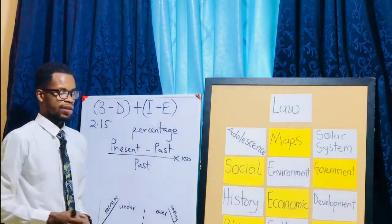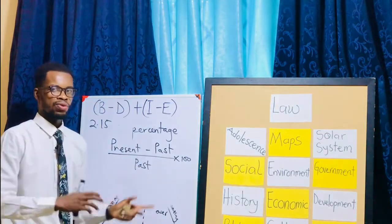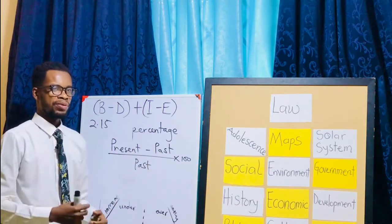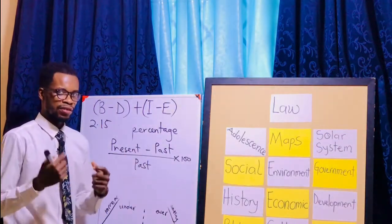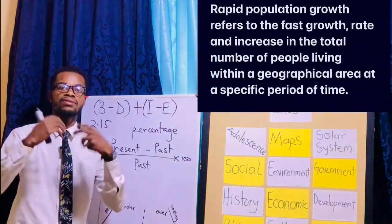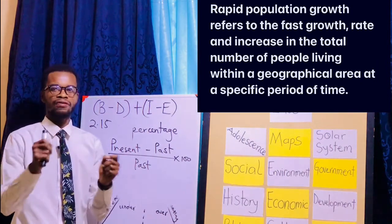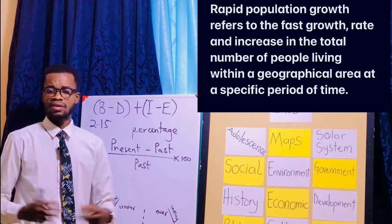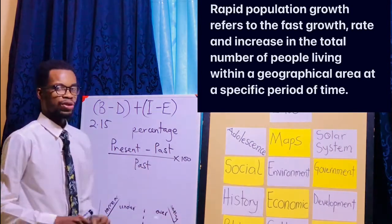When numbers keep growing very fast, we use the term rapid population growth. Rapid means fast, so rapid population growth is defined as the fast rate at which the total number of people living within a geographical area at a specific time increases. Make sure your spellings are correct when presenting these definitions in an exam, as examiners expect correct word choices.